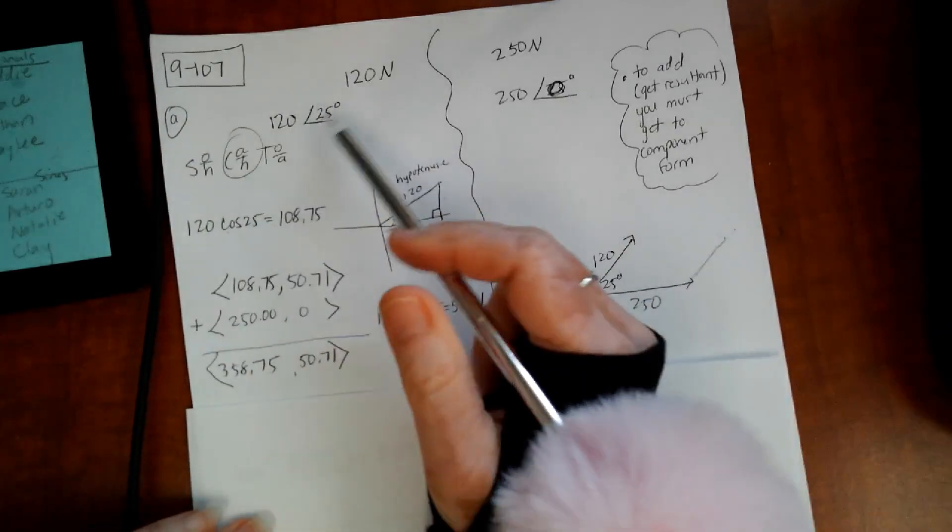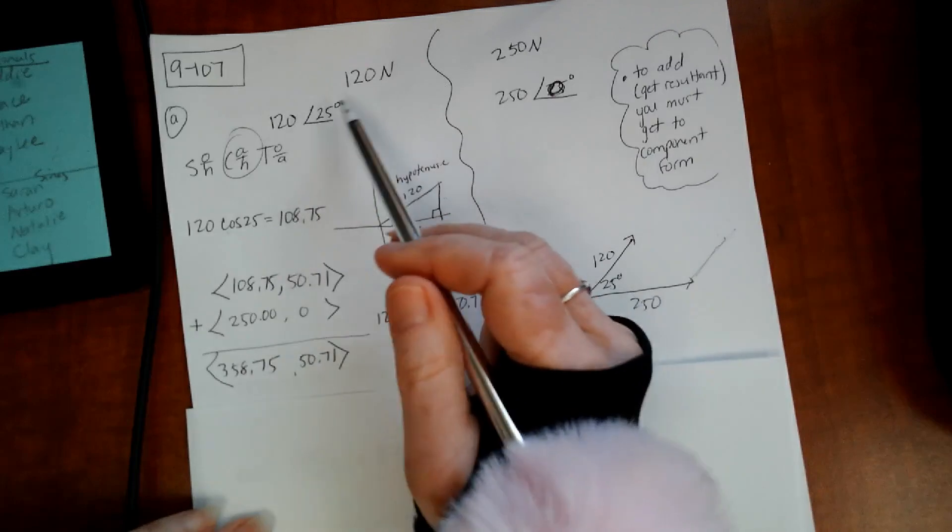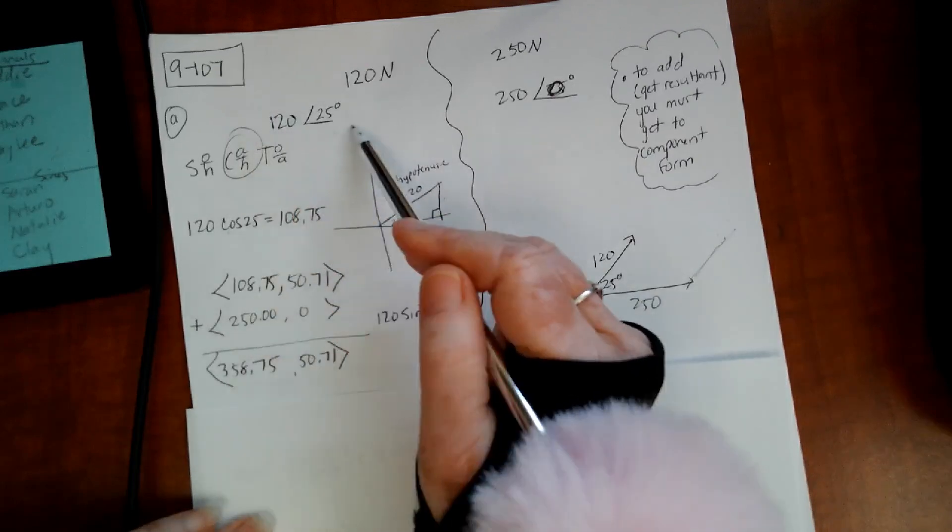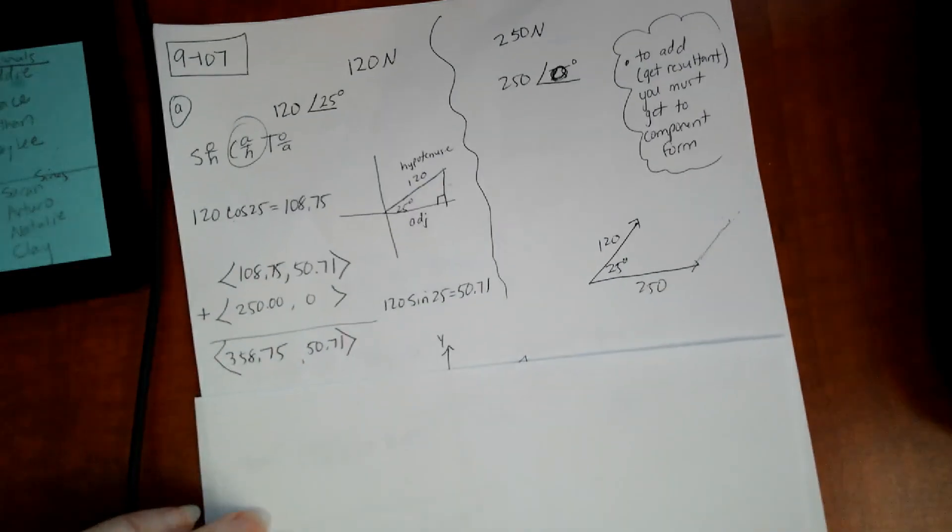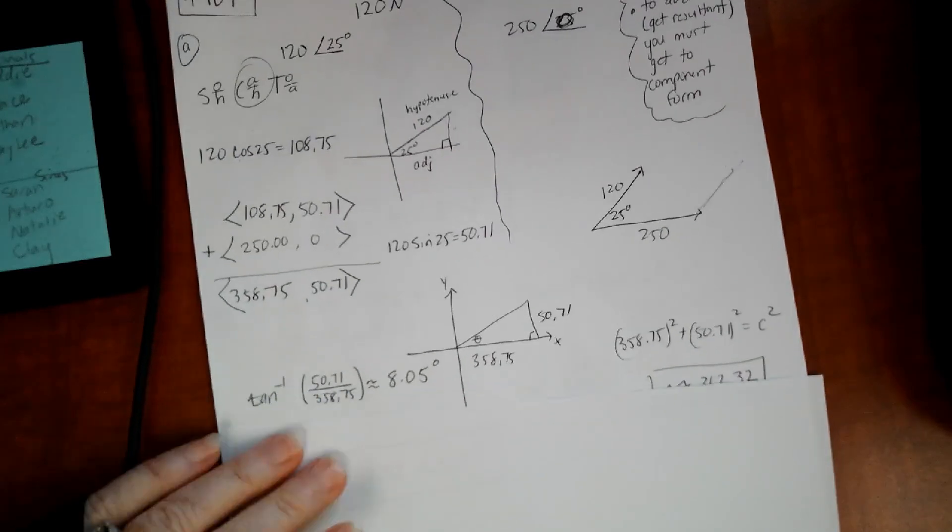That is the resultant vector in component form. But since we started out in this polar form, we started out in this form, I need to finish it out in the same form.